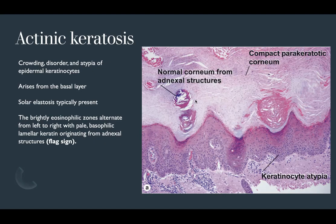The sharp cutoff between the interfollicular regions — where you see loss of granular layer and parakeratosis — and the adnexal structures, where orthokeratosis is preserved, is referred to as the flag sign. With abundant sun exposure, you'll also see solar elastosis present.